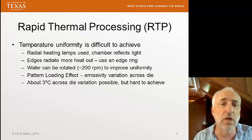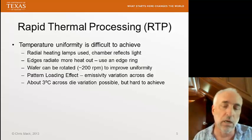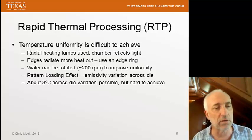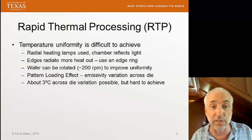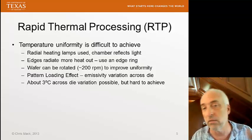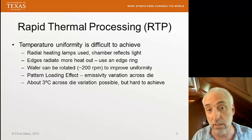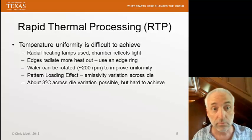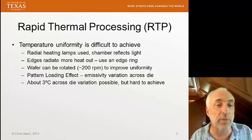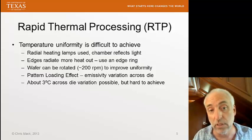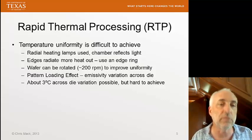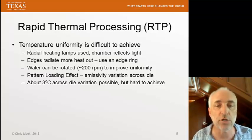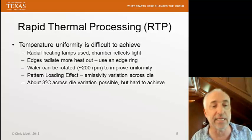The edges of the wafer radiate heat out, so the part of the wafer near the outside will be cooler than the middle. To address this, we use an edge ring — a structure close to the edge to help reflect heat back in. We also use radial heating lamps where we can put a little more energy on the outside compared to the middle. With all these measures, we can get temperature variation down to about three degrees across a single chip.